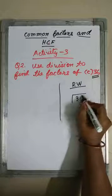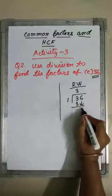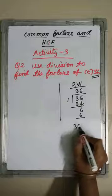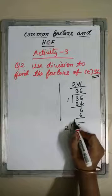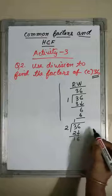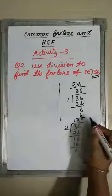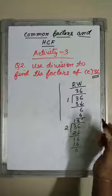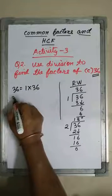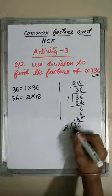36 divided by 1: 1 into 3 is 3, 6 comes down, 1 into 6 is 6 — remainder 0. So, 36 equals 1 into 36. Again, 36 divided by 2: 2 into 1 is 2, subtract to get 1, bring down 6 to get 16, 8 times — remainder 0. So, 36 equals 2 into 18.